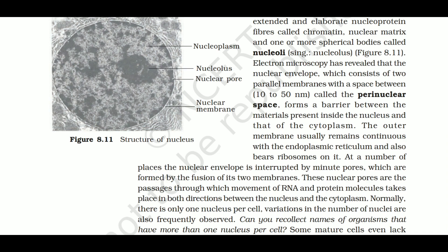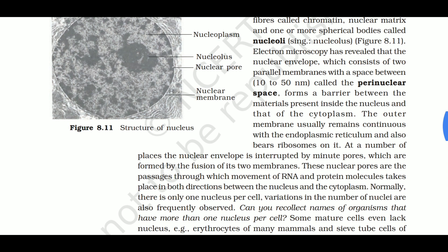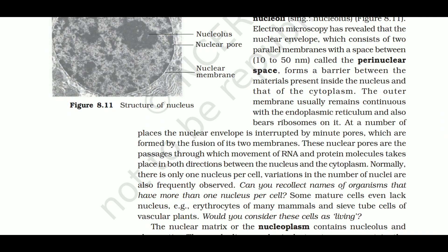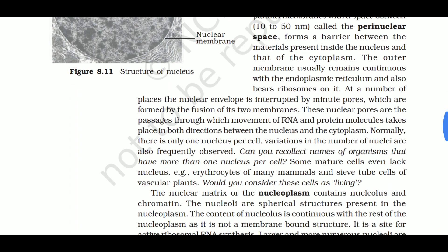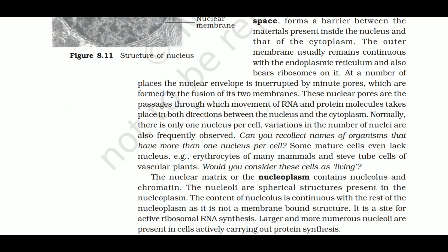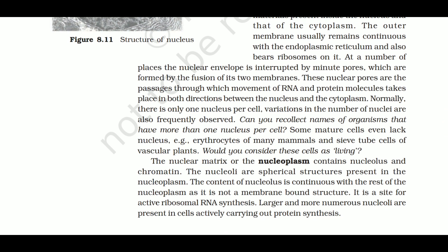The nucleus is bounded by a nuclear envelope, which is a double membrane. We have the nuclear pore, also called nuclear apparatus, nucleolus, and nucleoplasm. The nuclear envelope consists of two parallel membranes with a perinuclear space of 10 to 50 nanometers between them, forming a barrier between the nucleus and cytoplasm. The outer membrane remains continuous with the endoplasmic reticulum.